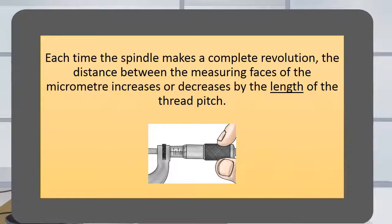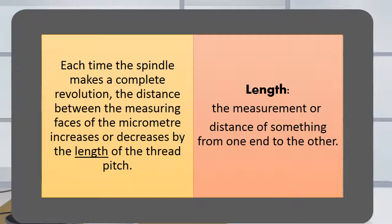Each time the spindle makes a complete revolution, the distance between the measuring faces of the micrometer increases or decreases by the length of the threaded pitch. Length is the measurement or distance of something from one end to the other.